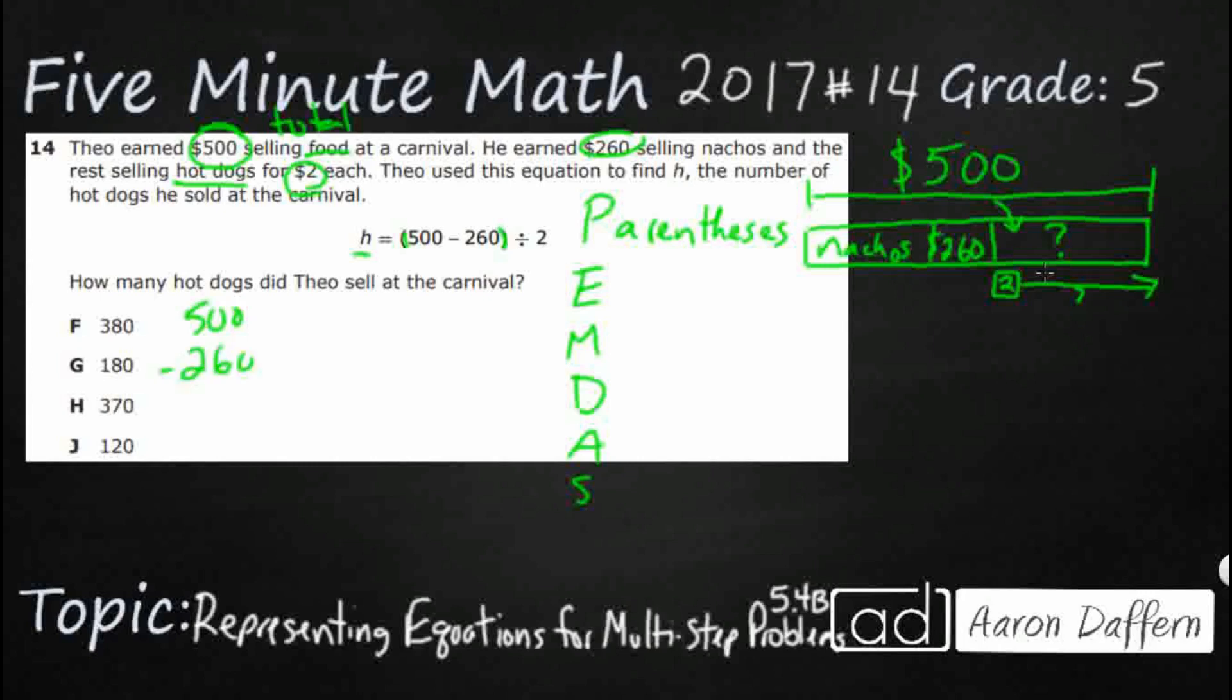And that is going to be $500 minus $260. We are going to need to regroup just a little bit. And so, that's going to get us $240. So, there we go. Let's call that $240. That's how much money he earned from the hot dogs.